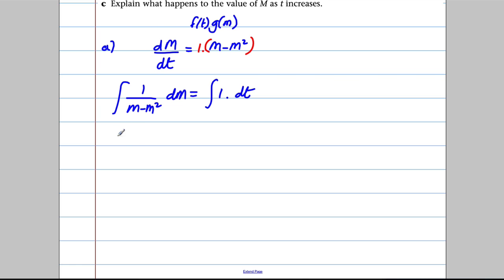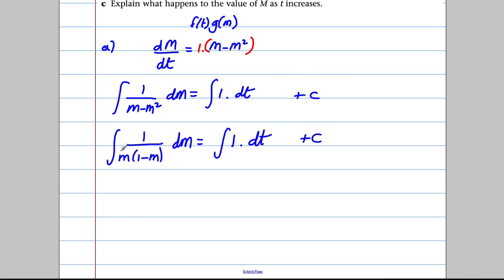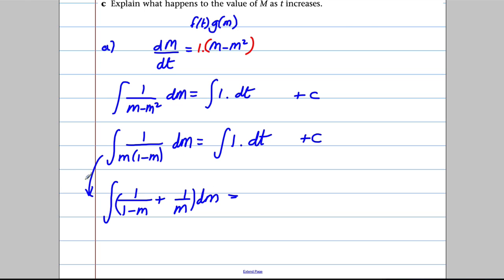Now this denominator can be factorised: it's 1/[m(1 − m)] dm = ∫1 dt. Don't forget you'll have a constant of integration. This can be written in partial fractions. I'm not going to go through how to get partial fractions here, but the partial fractions turn out to give 1/m + 1/(1−m). You can verify this: cross-multiplying back gives m + (1−m) = 1 over the original denominator. So on the right side I integrate 1 with respect to t plus c.